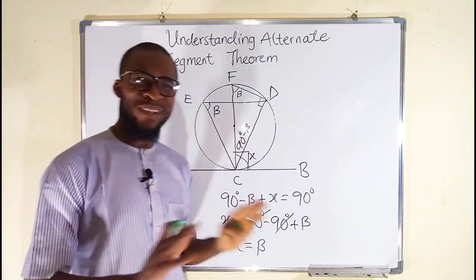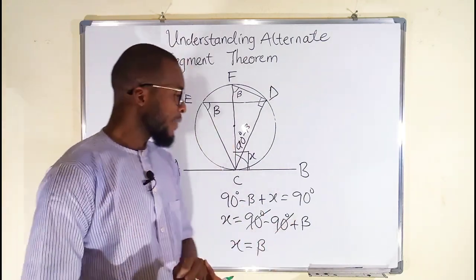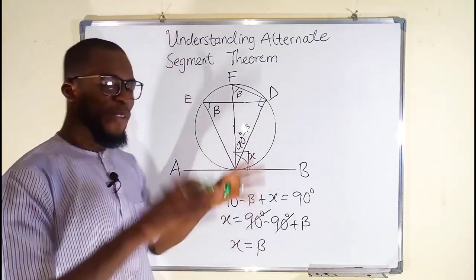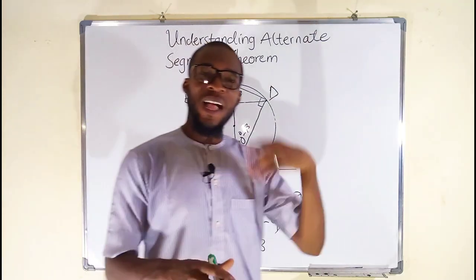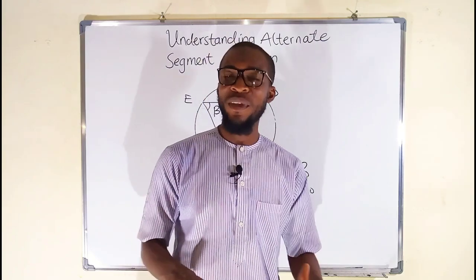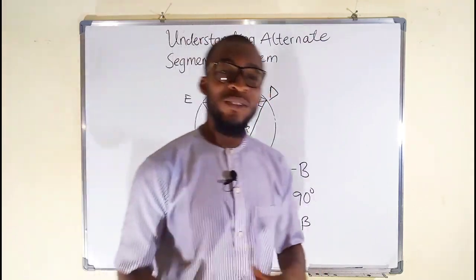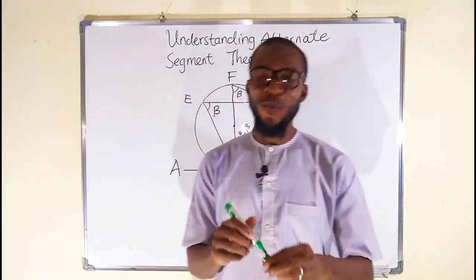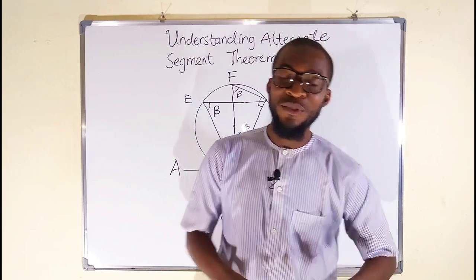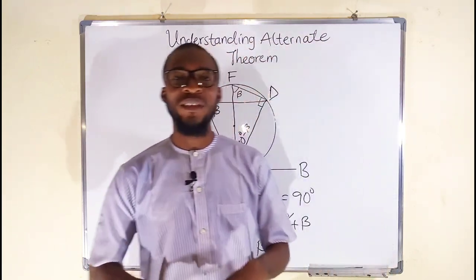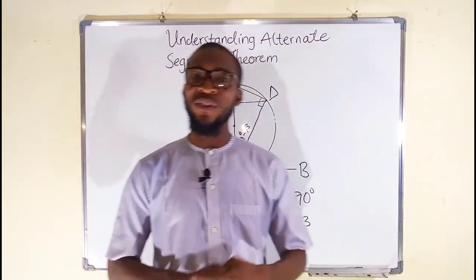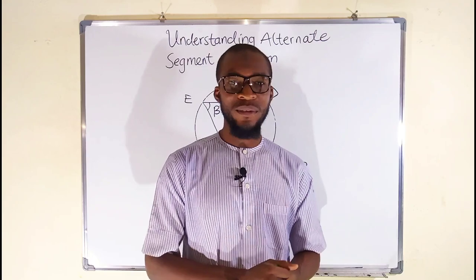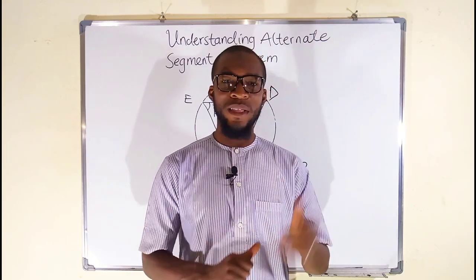This shows that the angle subtended by the chord and the tangent is equal to beta, which is exactly equal to the inscribed angle — and hence proved. This is how to understand the Alternate Segment Theorem. Thank you for watching. Do share with your learning colleagues and don't forget to subscribe to my YouTube channel for more exciting videos.